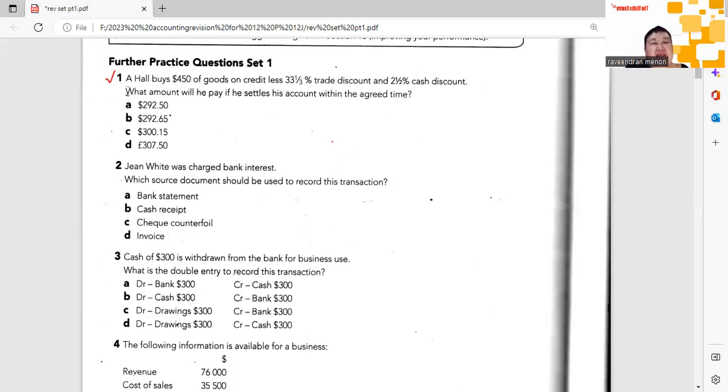B. Hall buys $450 worth of goods on credit at 33⅓% discount and 2½% cash discount. Trade discount is automatically given to you so that you as the seller can make some money from when you buy goods from your supplier. 2½% cash discount is given to encourage prompt payment. That depends on the terms and conditions between seller and buyer.